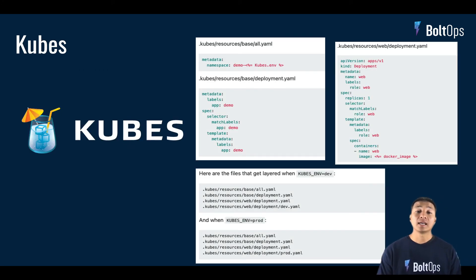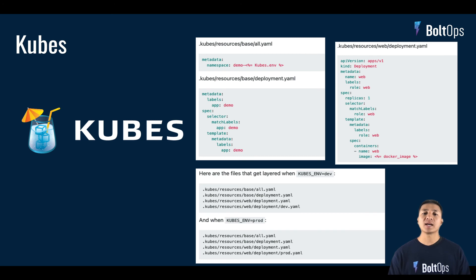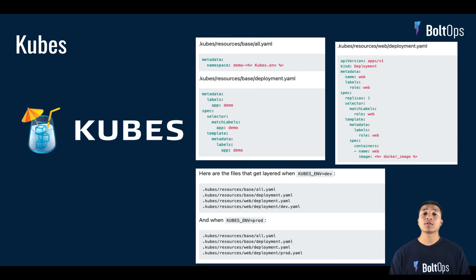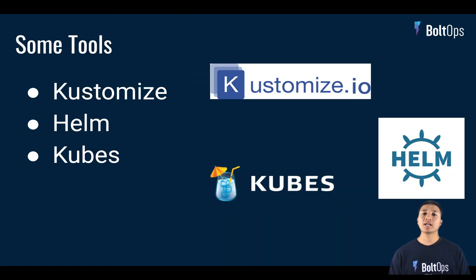Kubes — disclosure: this is a tool I wrote, because I messed around with both Helm and Kustomize and felt they didn't quite fit what I was trying to do, which was focused on app deployment. Kubes tries to take the best of both. It has some templating language built in using ERB, and it also has the concept of overlays — called layering — except it does it in a very conventional way so you don't have to type as much. It allows you to merge and combine different YAML files together and reduce a lot of duplication.